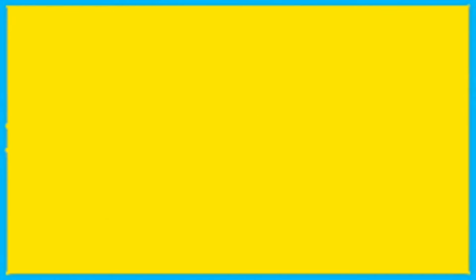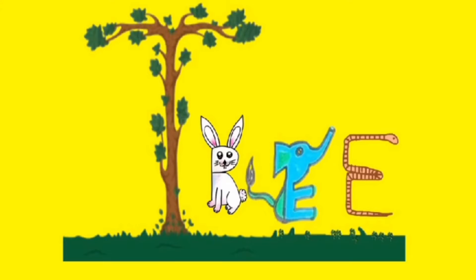And that's the story, children! Here you can see we have the word T-R-E-E — tree. And we have all four characters in the story in the same picture. That's the beauty of this story!